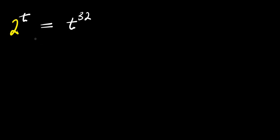Hello. How to solve: 2 to the power of t equals t to the power of 32. We are solving for the value of t that will make the left hand side of this equation equal the right hand side.